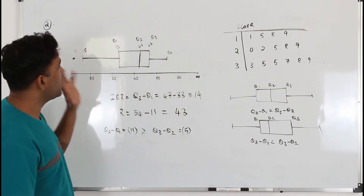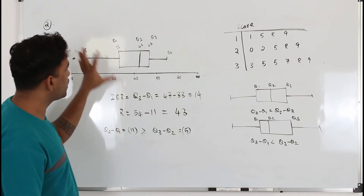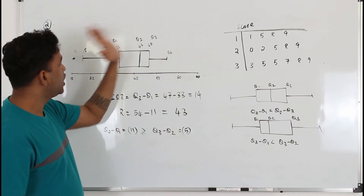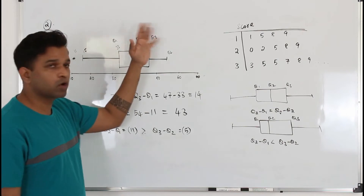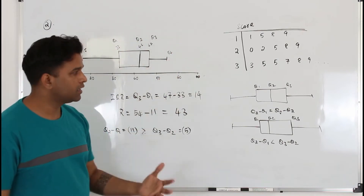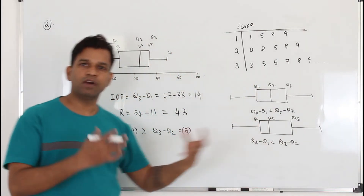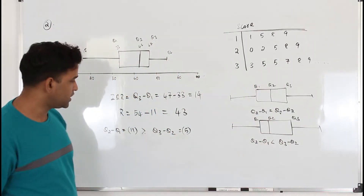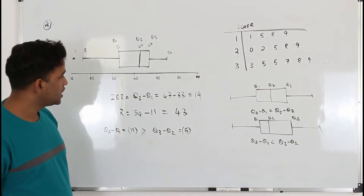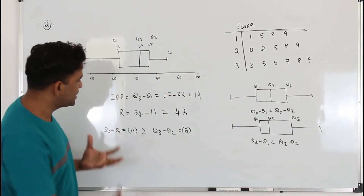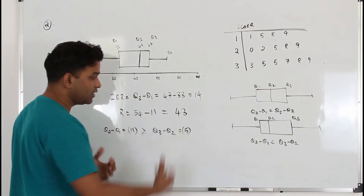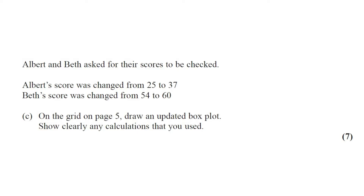So when you have a box and whisker plot with lower quartile, upper quartile, and median, comparing those two distances is one of the easiest ways to determine the skewness of the data. In this case the data is negatively skewed.